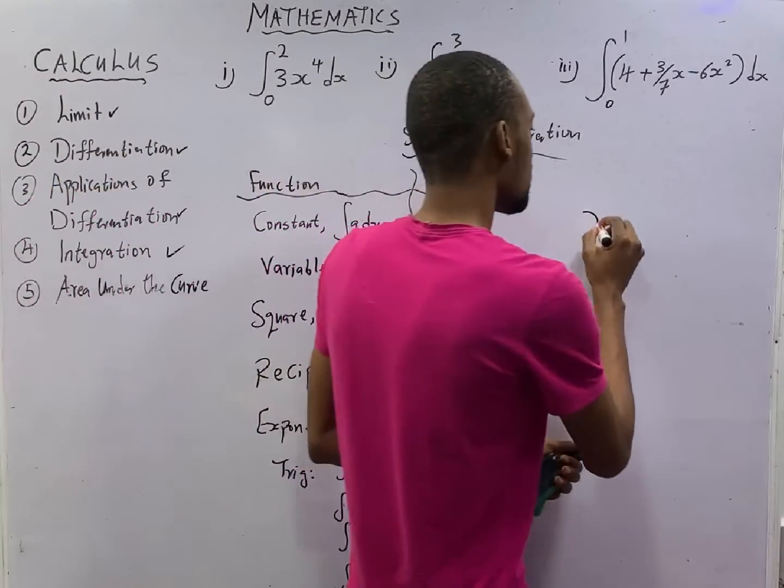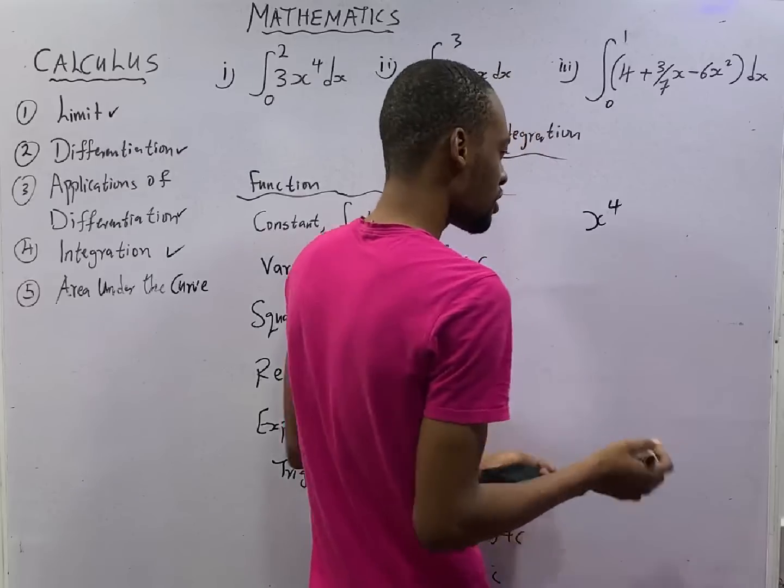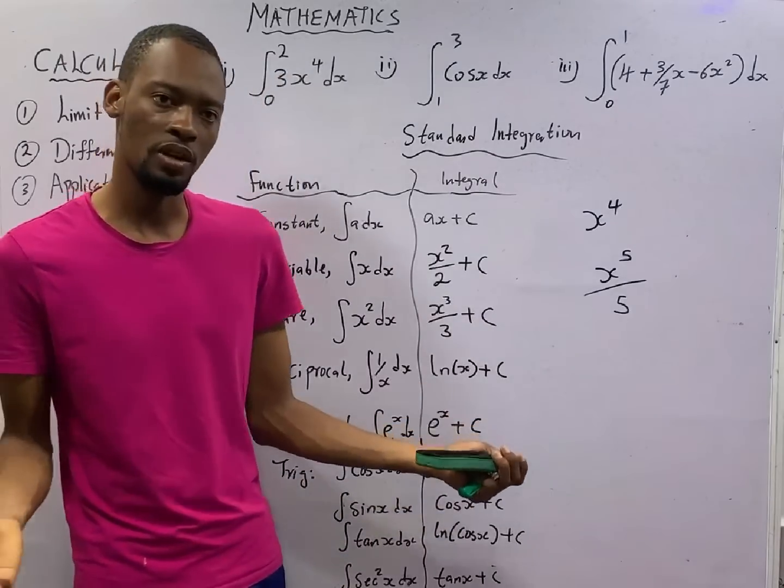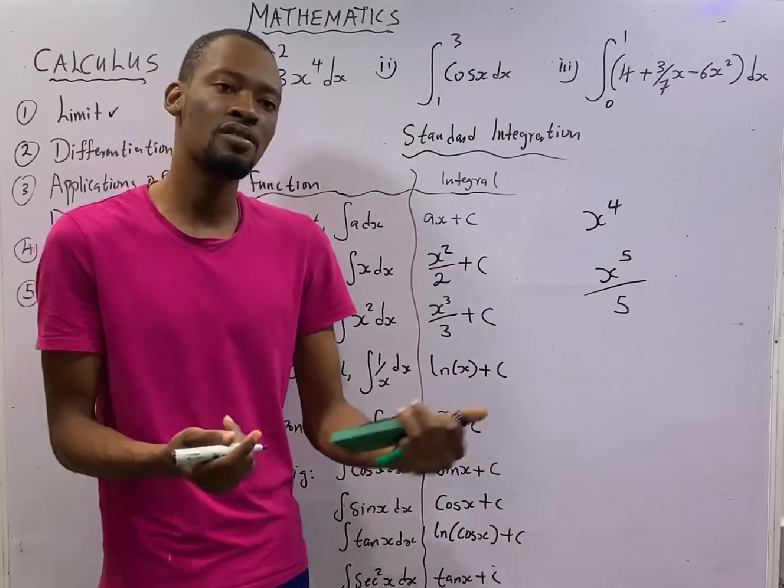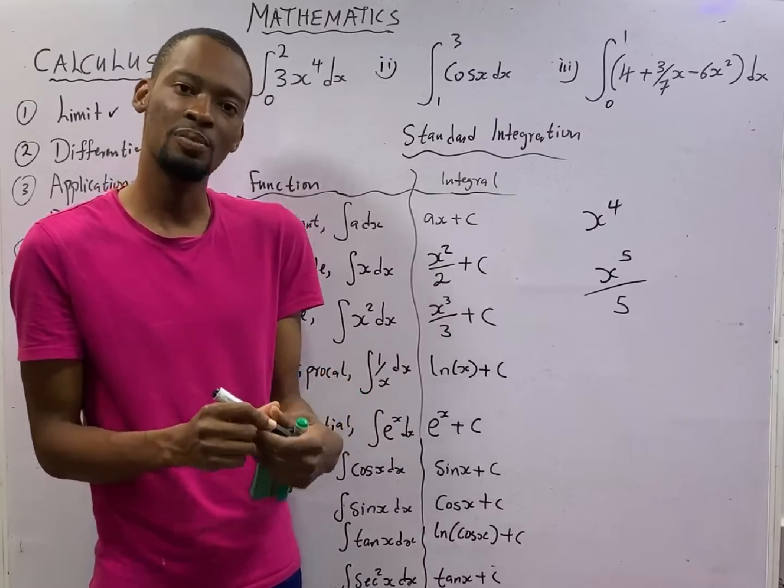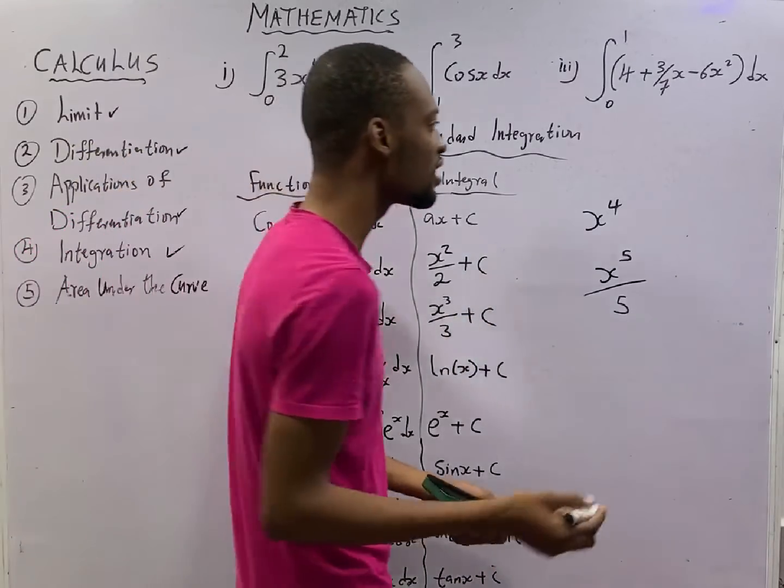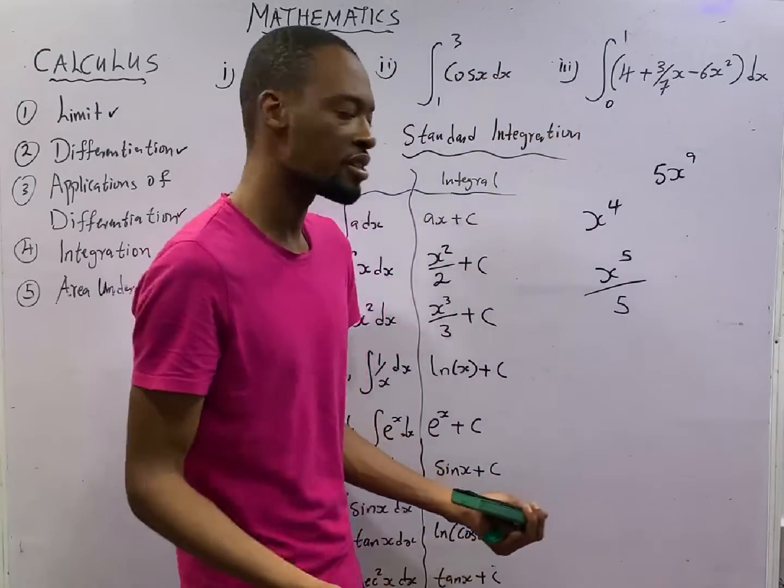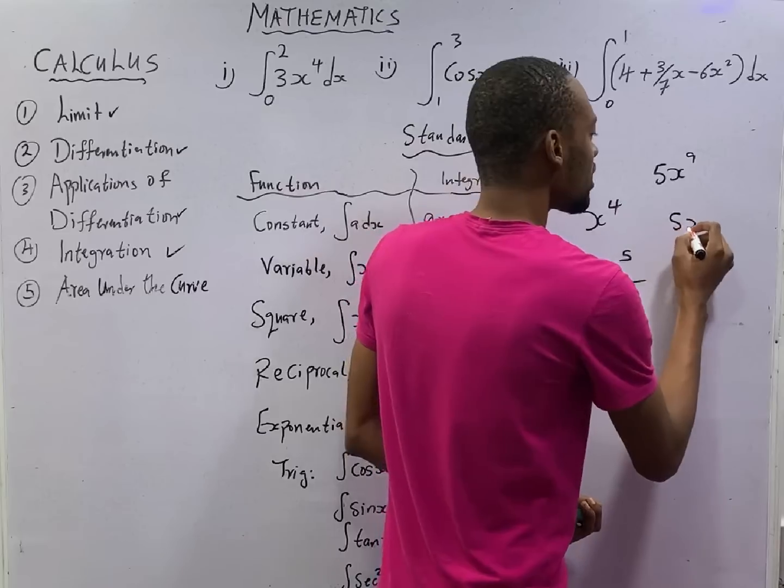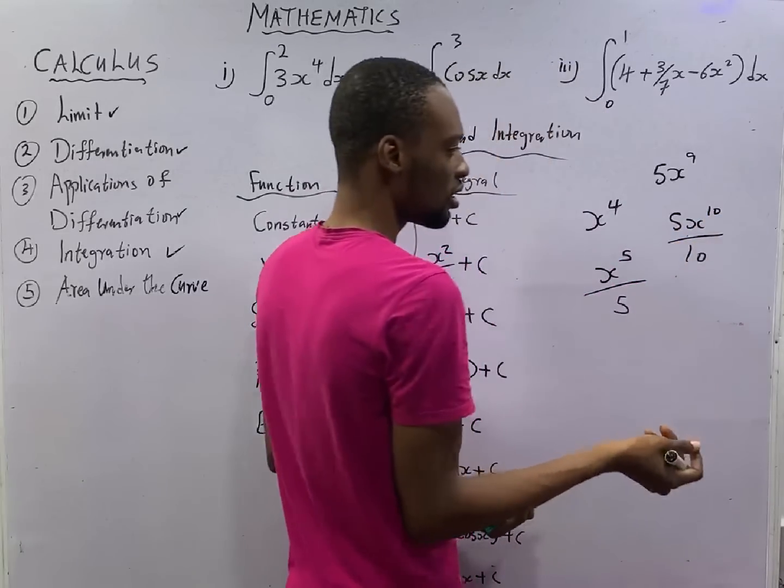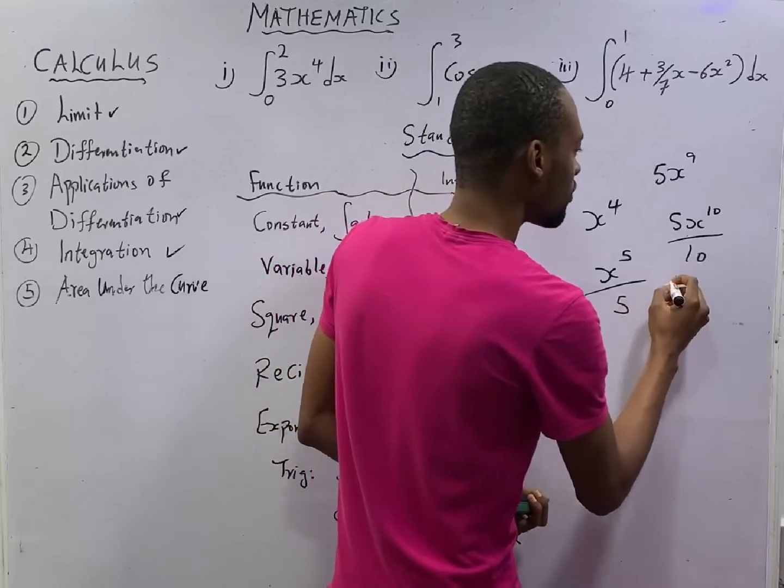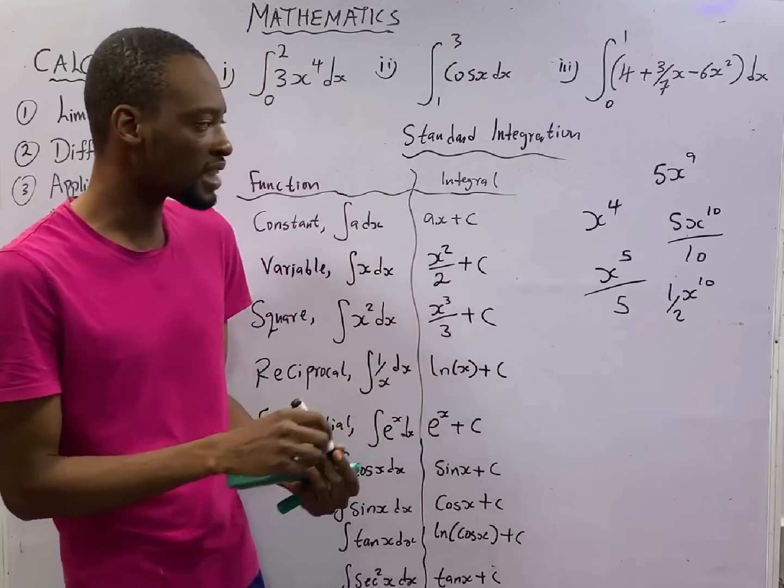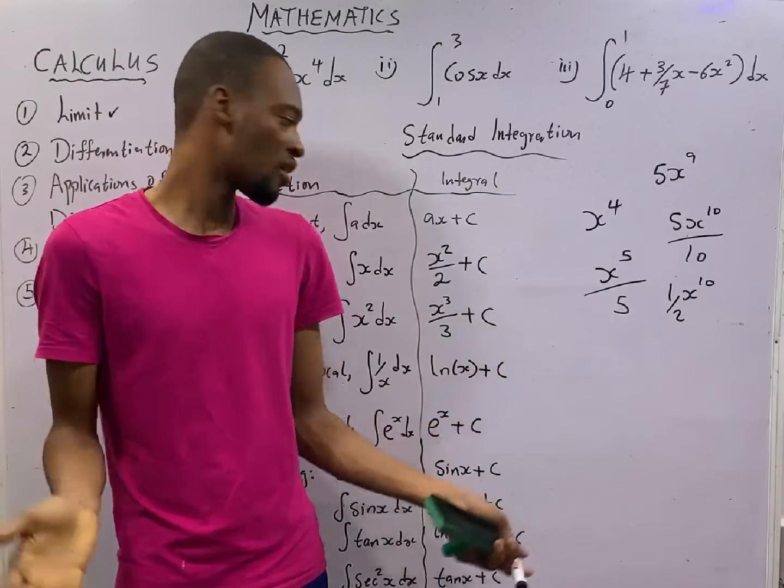If I say integrate s raised to the power of 4, it is s raised to the power of 5 over 5. Add 1 to the power, divided by the power. Integrate s raised to the power of 9, it is s raised to the power of 10 over 10. If I say integrate 5s raised to the power of 9, this is 5 remains, s raised to the power of 10 over 10. Then you can say 5 divided by 10 to have 1 over 2 s raised to the power of 10, or s raised to the power of 10 over 2. It doesn't get more difficult than that.